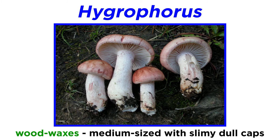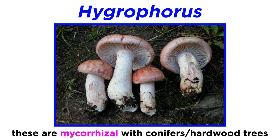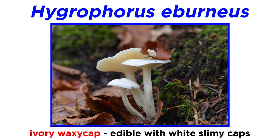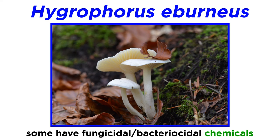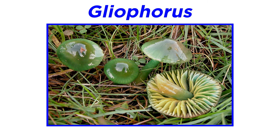Mushrooms in the genus Hygrophorus, commonly called wood waxes, are medium-sized mushrooms with slimy, dull-colored caps. You will find these mushrooms on the ground, and they are mycorrhizal with various conifers and hardwood trees. The type species for the genus is Hygrophorus ibernius, commonly called the ivory waxy cap. These are edible mushrooms that are entirely white, have very slimy caps when wet, and some fungicidal and bactericidal chemicals have been isolated from the mushroom.